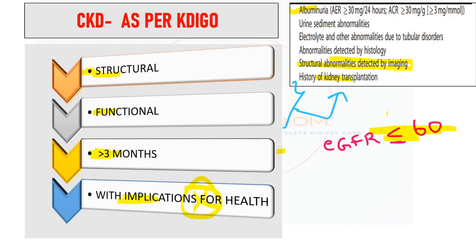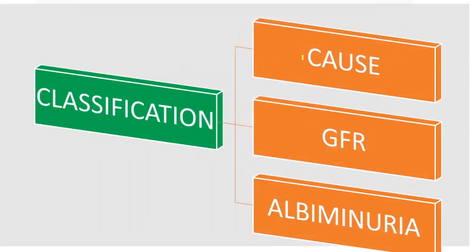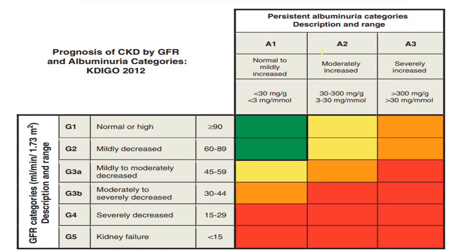For the clinical aspect, the key point is an eGFR of less than 60 or a shrunken kidney persisting for more than three months, which fits the criteria of chronic kidney disease. CKD is classified based on cause, GFR, and albuminuria. The cause is not clearly defined by KDIGO, but regarding GFR and albuminuria, there is a table used to assess prognosis.